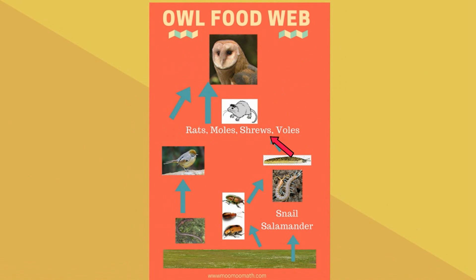The rats, moles, shrews, and even the birds like to eat slugs, centipedes, snails, and salamanders.